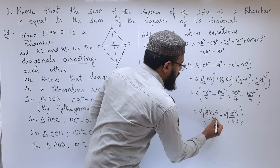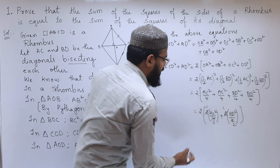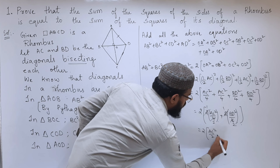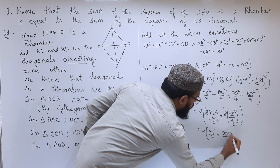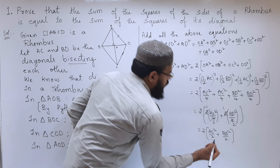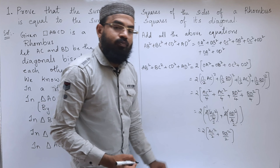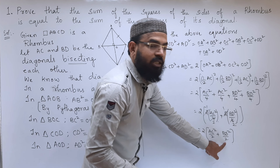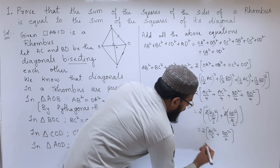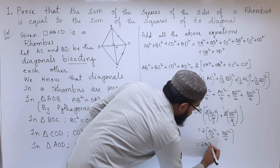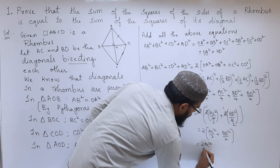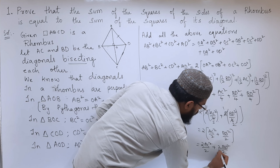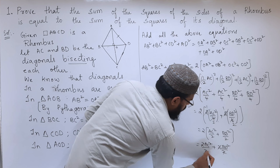So that gives us 2 into AC²/4 + BD²/4 + AC²/4 + BD²/4, which simplifies to 2 into AC²/4 twice and BD²/4 twice. So we can write 2 × (AC²/2 + BD²/2). The 2 cancels with the 2 in the denominator.